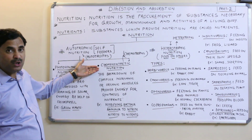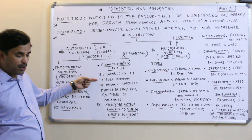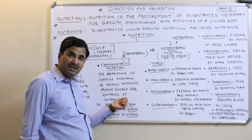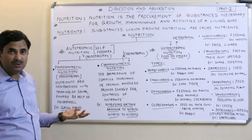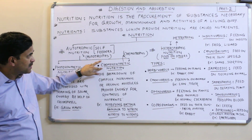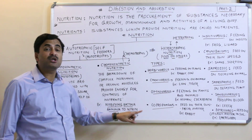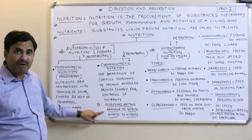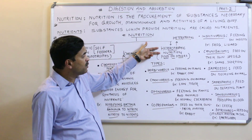In chemosynthetic nutrition, there is no use of solar energy. Instead, the breakdown of complex inorganic or organic molecules provides energy for the synthesis of nutrients. Chemosynthetic nutrition is found in nitrifying bacteria, which convert ammonia to nitrite and then nitrite to nitrate.